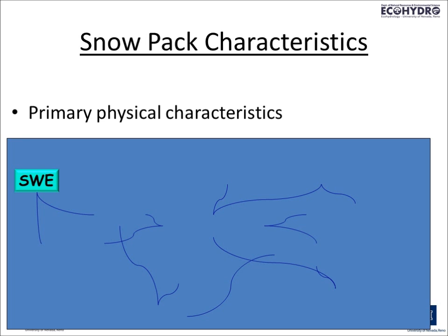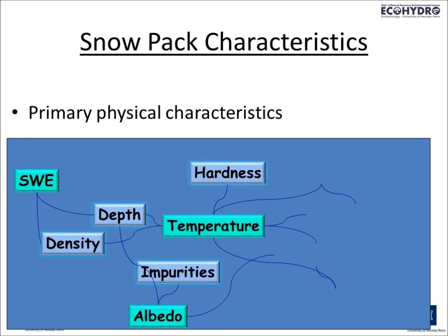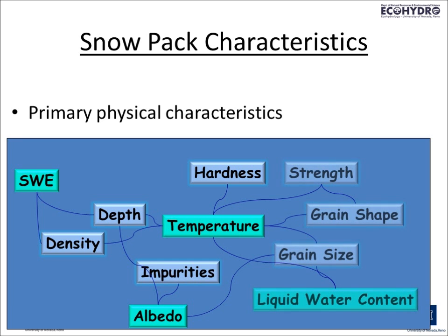Some of the primary snowpack characteristics from which snow water equivalent is derived include depth and density, which are in turn related to the hardness of the grains and the hardness of the snowpack, the temperature, the proportion of impurities included in the snowpack, and the degree to which the snow absorbs or reflects solar energy — that's called the albedo. Those in turn are related to the strength, grain shape, grain size, and liquid water content of the snowpack. Those on the right are more micro-physical characteristics, and all of these together lead to the determination of snow water equivalent.